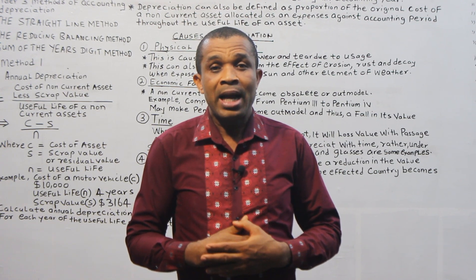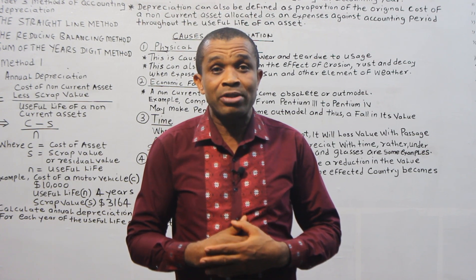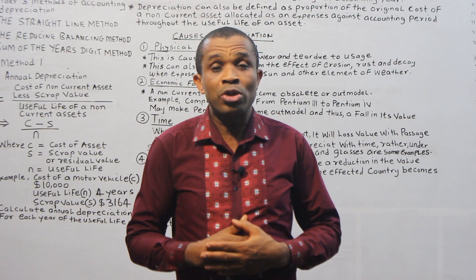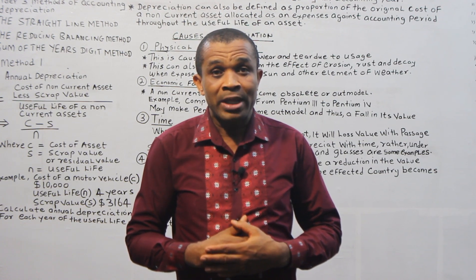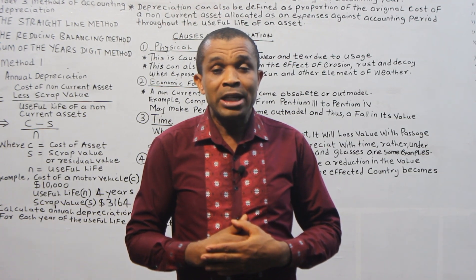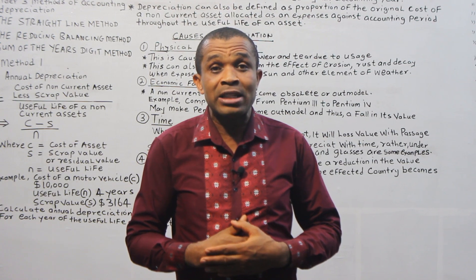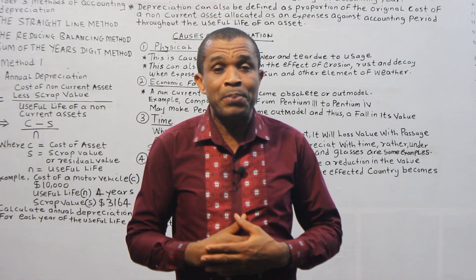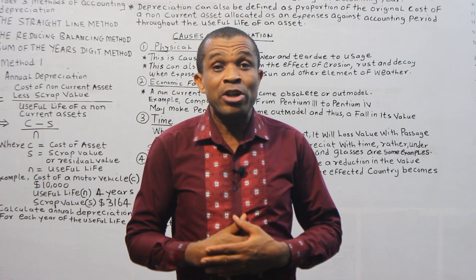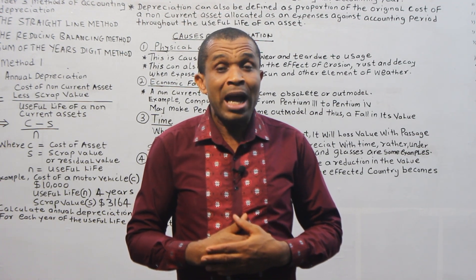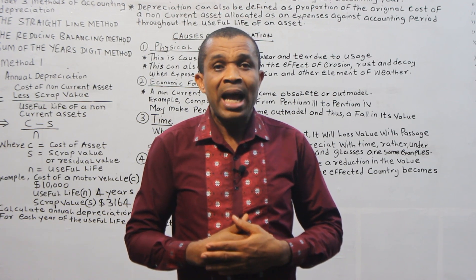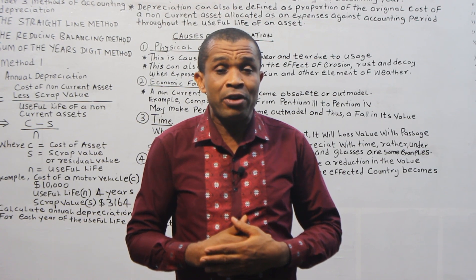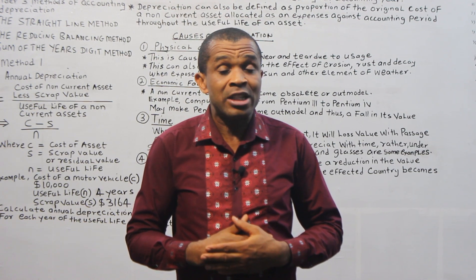If a business acquires a motor vehicle as part of its non-current assets and the original cost is $5,000, with a useful life of 5 years, then dividing $5,000 by 5 years gives $1,000 per year. In every accounting period, $1,000 will be deducted as an expense from the profit. This amount will not be spent but saved, and if done for 5 years, $5,000 will be recovered for the purchase of another asset.